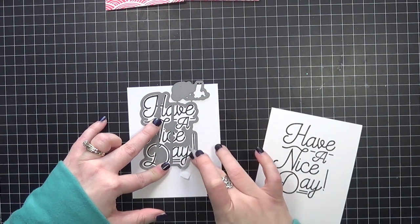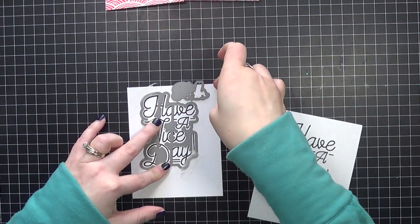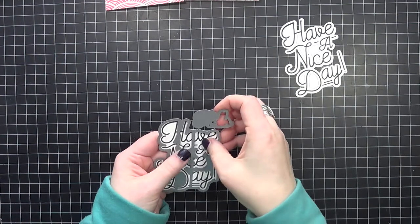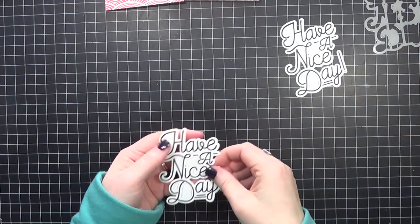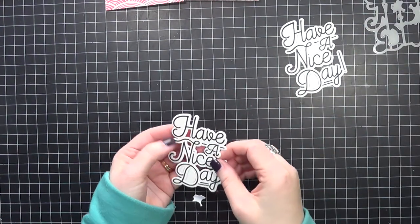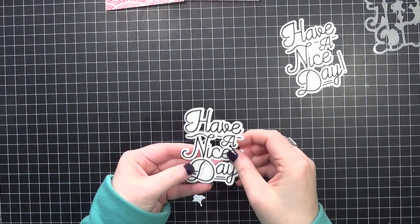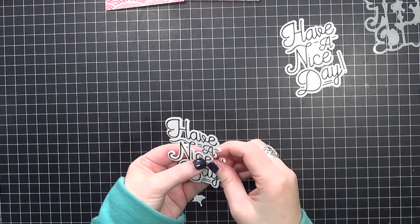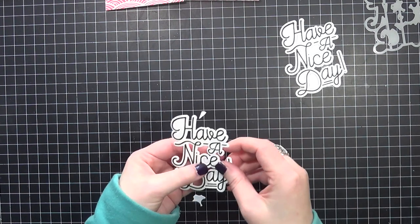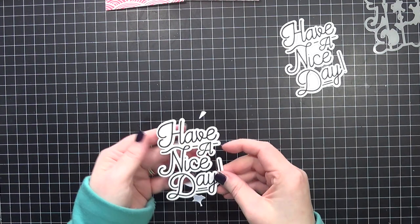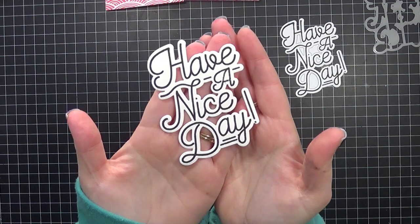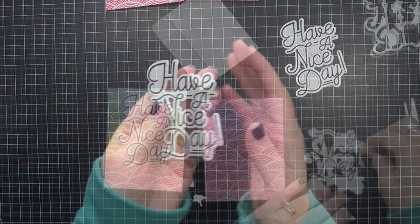I just love how it cuts out the inner pieces of like the D and the middle part of that sentiment too. It just looks so nice. I love this and I'm going to hold it up to the camera so you can really see the detail of this die. I just love how big and bold it is and how it can cover a card front.